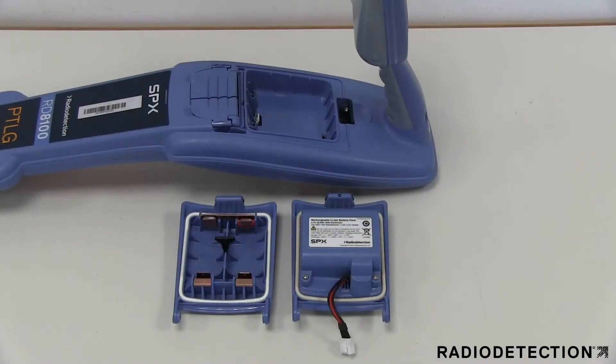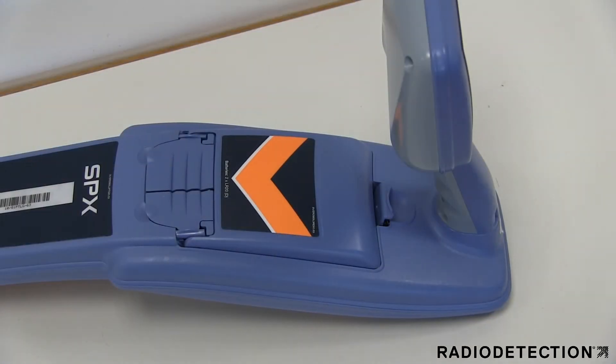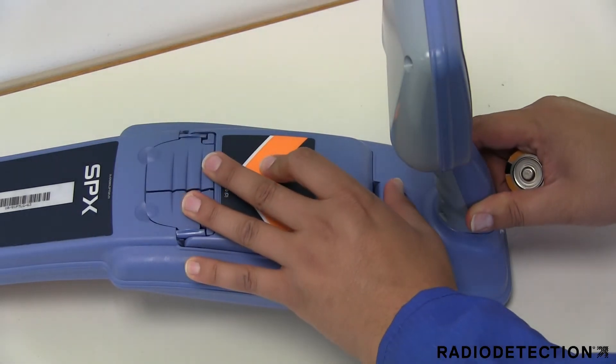The locator can be powered by two D-cell alkaline or nickel metal hydride batteries or a rechargeable battery pack. The locator is supplied with the battery compartment already fitted.